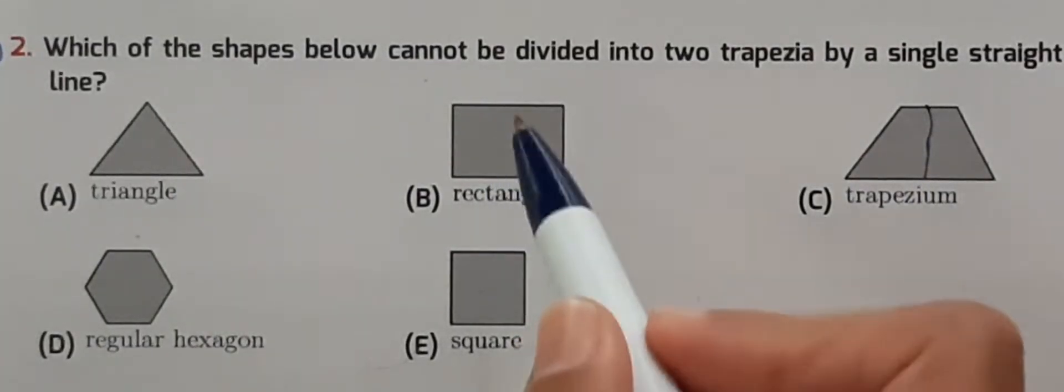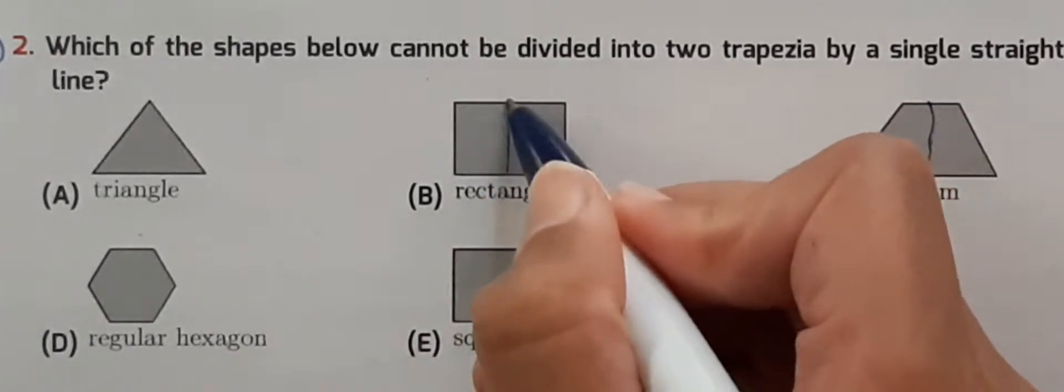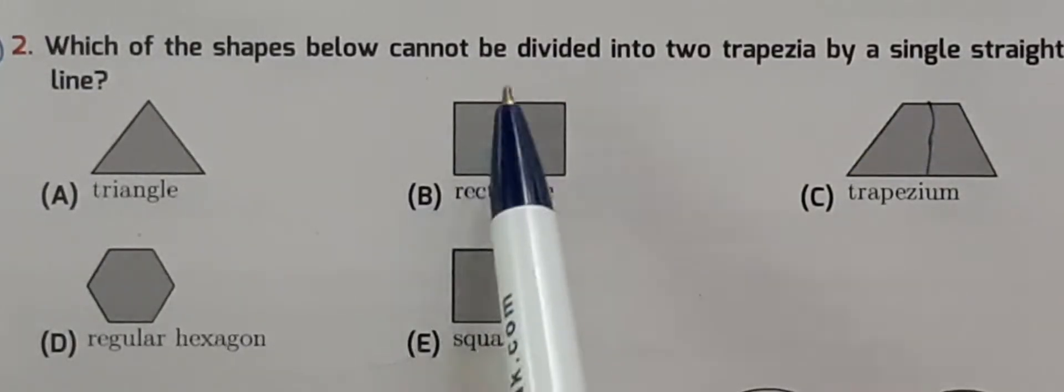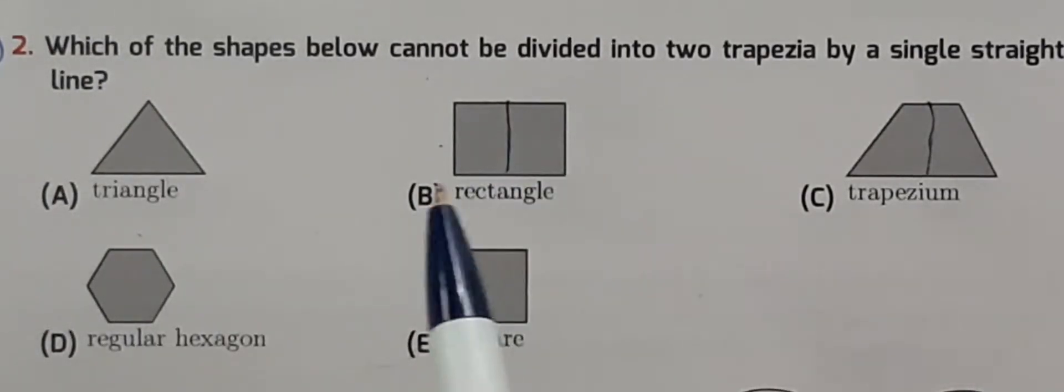Now let's check the rectangle. When divided, it has four sides with two lines parallel to each other, so this also creates trapeziums.